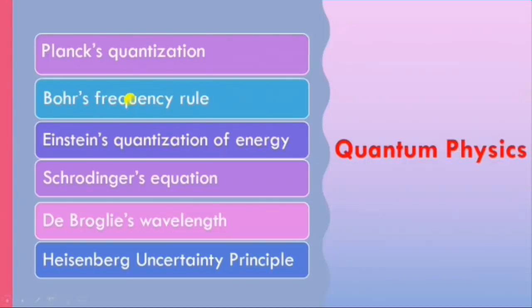Planck's quantization, Bohr's frequency rule, Einstein's quantization of energy, Schrodinger's equation, de Broglie's wavelength, and Heisenberg uncertainty principle—these are the most outstanding works of scientists who won Nobel prizes in quantum mechanics.